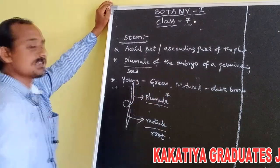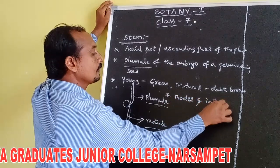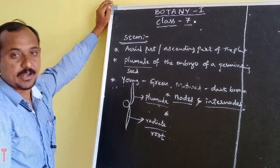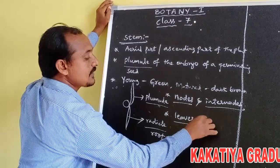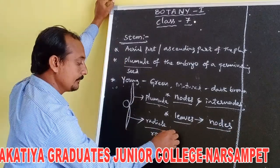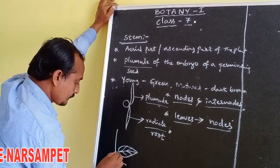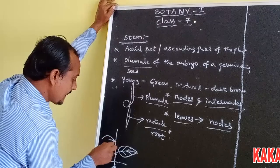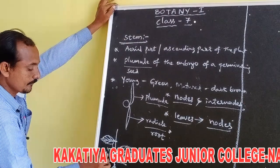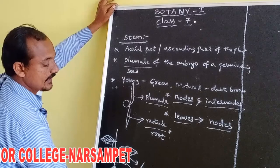Each stem consists of nodes and internodes. At the place of the nodes, leaves are born or developed. The portion between the two nodes is called internode. Leaves are developed or born at the place of the nodes.